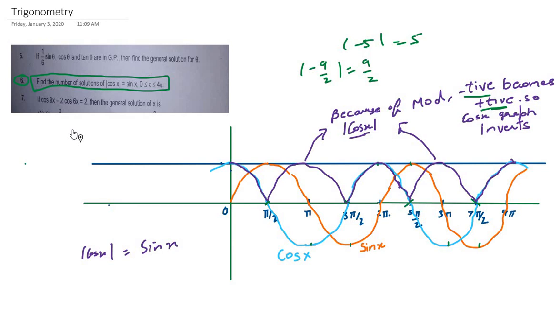Wherever sin x graph intersects with |cos x| graph, that is a solution. I'm marking all the intersections of these two graphs with red. This is the first intersection, then moving ahead, this is the second intersection.